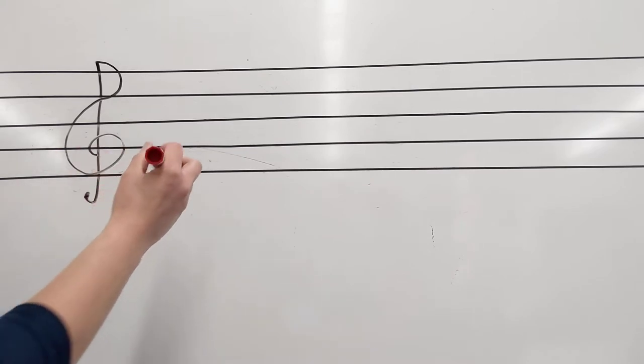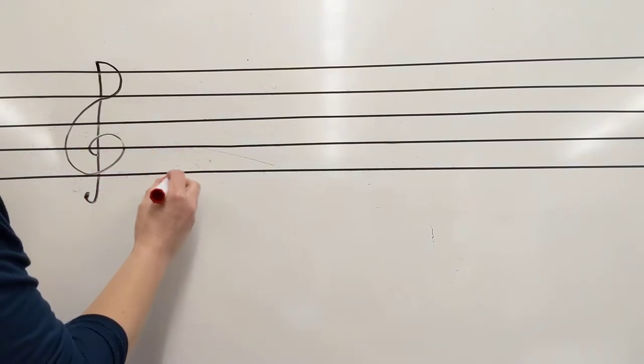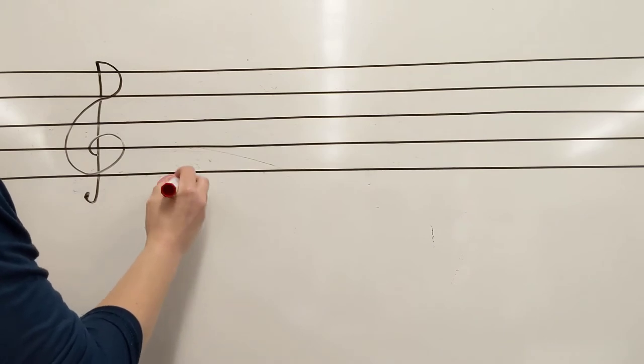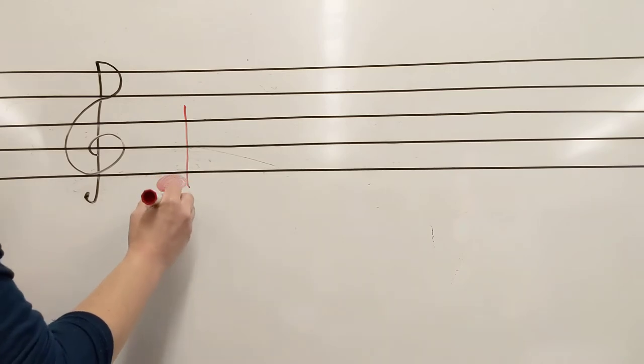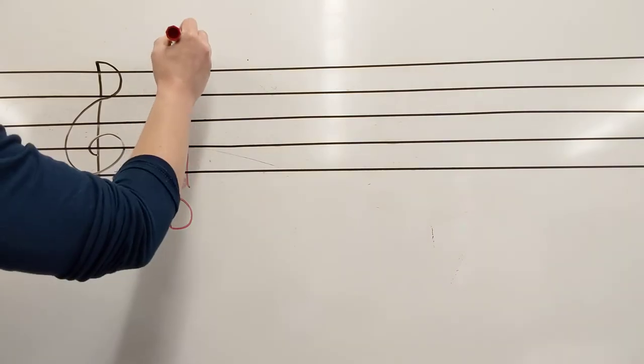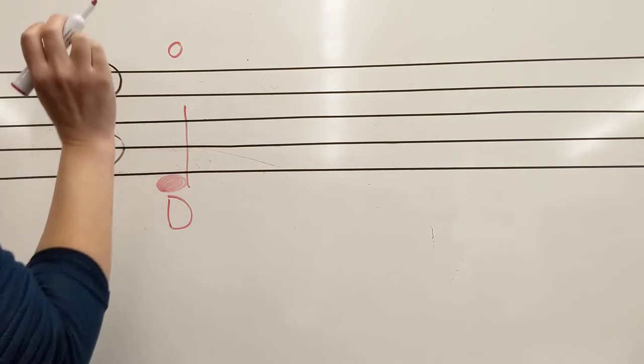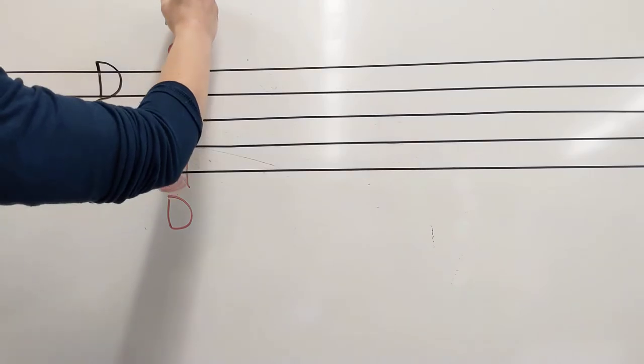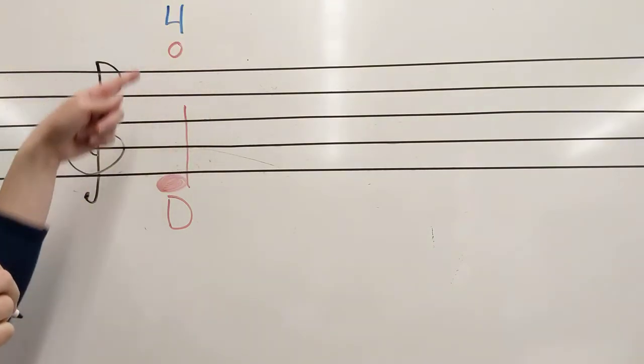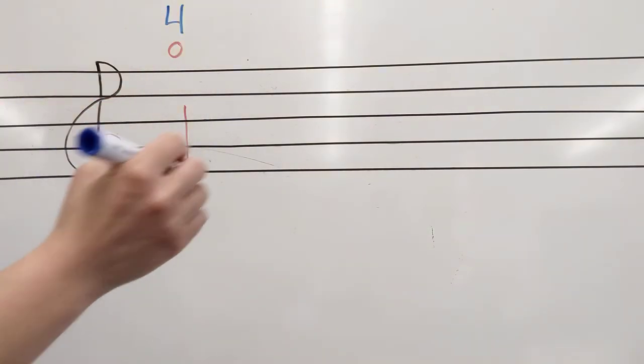And I'm going to start with a D. You might say, hey, we're learning our G-string notes. Why are you giving me a D? Well, two reasons. The first is that it's a good starting point. It's a note that you know. I'm going to label it. It's a D. You know it as zero fingers on your D-string. However, you can also play this D on your G-string with a fourth finger. So all my G-string labels are going to be in blue for today.